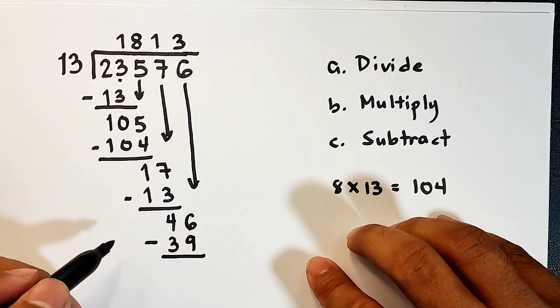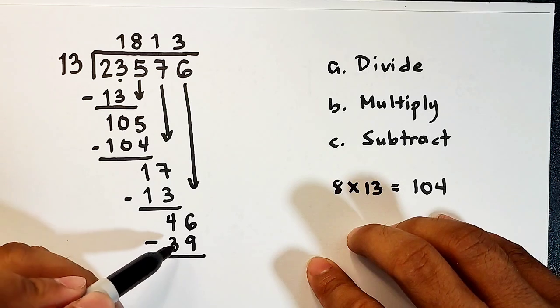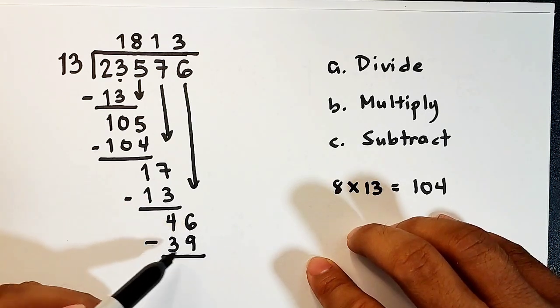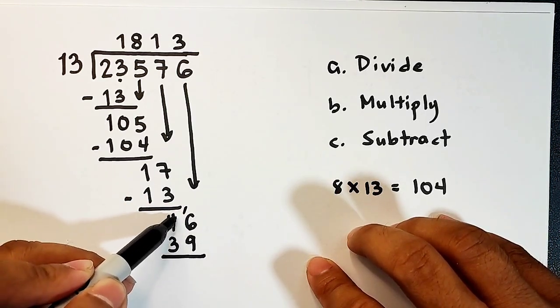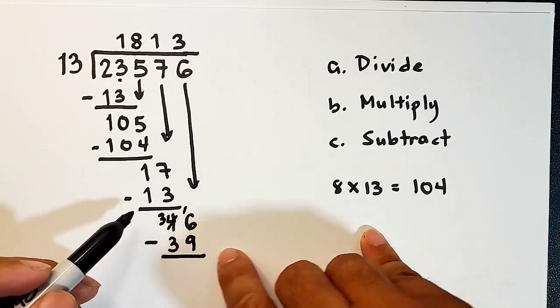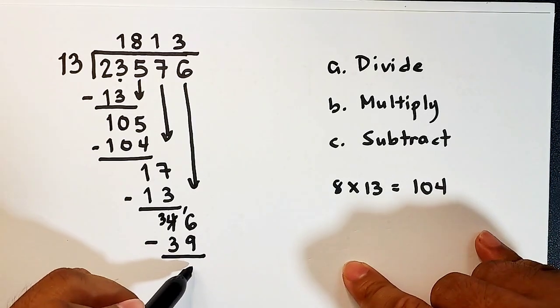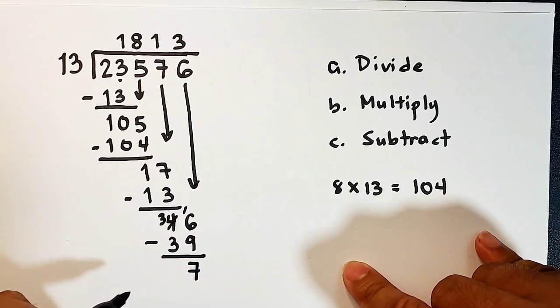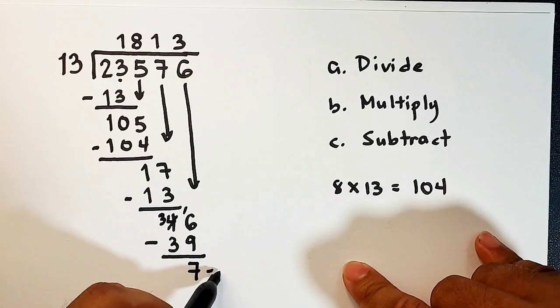Then we will subtract these numbers. So subtracting this, 6 minus 9 cannot be. We will borrow 1 here from 4. It will become 3. So what we have now is 16 minus 9. And that is equal to 7. Meaning, this is your remainder.